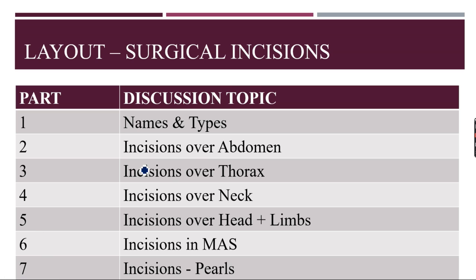Part 1 covers the various names and types of incisions. Part 2 covers specific incisions placed over the abdominal area. Part 3 covers the thoracic area. Part 4 covers the neck, and Part 5 covers the head region along with the limbs if possible.